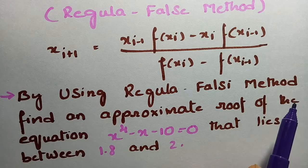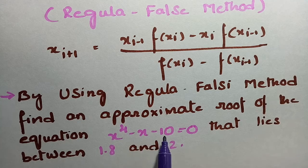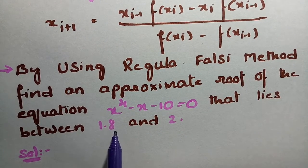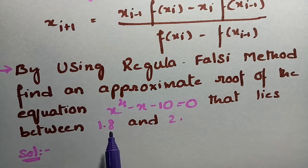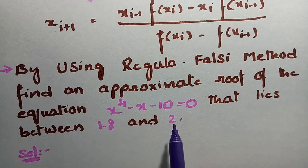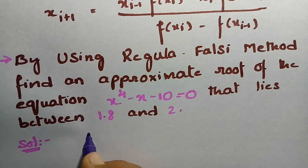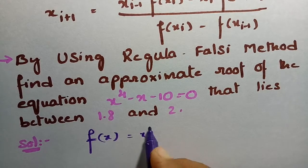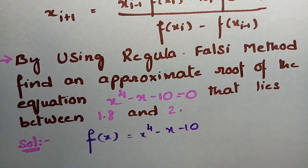Using the Regula Falsi method, find an approximate root of the equation x⁴ - x - 10 = 0. The root lies between 1.8 and 2, and it is given that x₀ = 1.8 and x₁ = 2. Let's get started to solve this problem. We consider f(x) = x⁴ - x - 10.